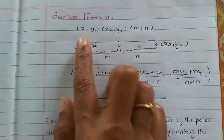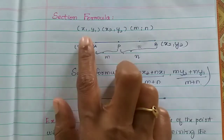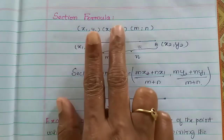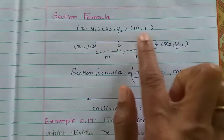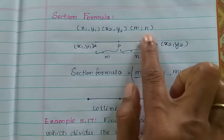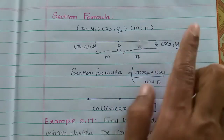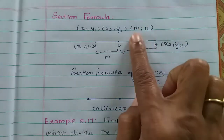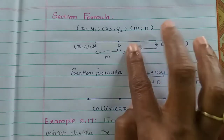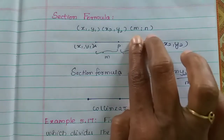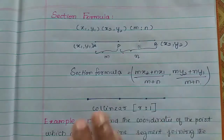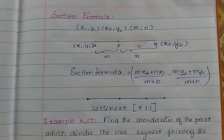Here we have two points: x1, y1 and x2, y2. The ratio is m is to n. The sum and difference of the ratio gives equal parts.